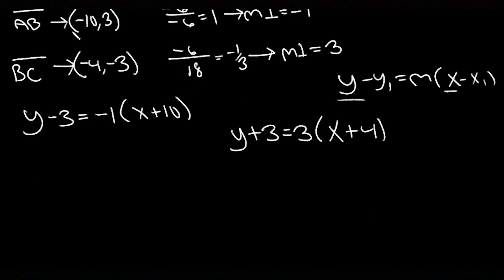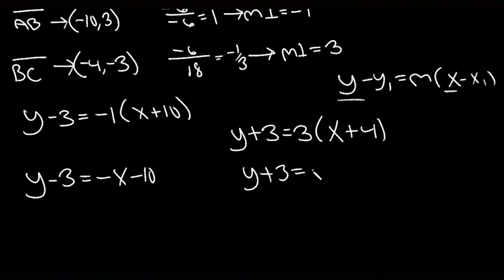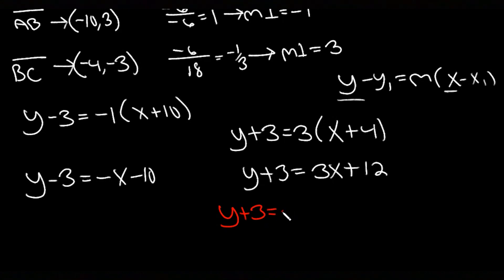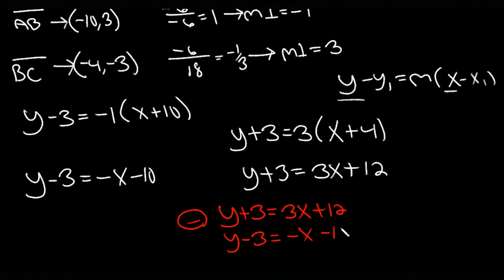Cleaning up the right-hand sides: the first equation becomes y - 3 = -x - 10, and the second becomes y + 3 = 3x + 12. To solve this 2×2 system I'll eliminate y by subtraction. Rewriting: y + 3 = 3x + 12 minus y - 3 = -x - 10, so y cancels.